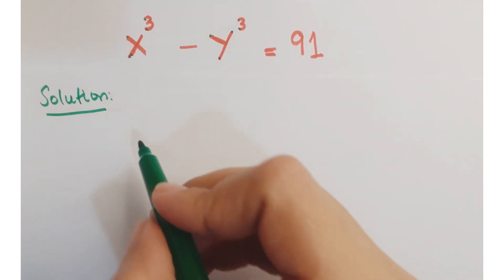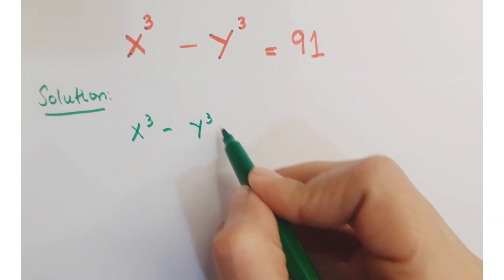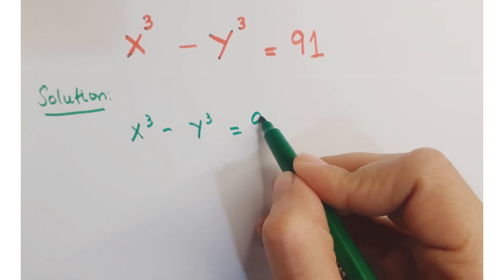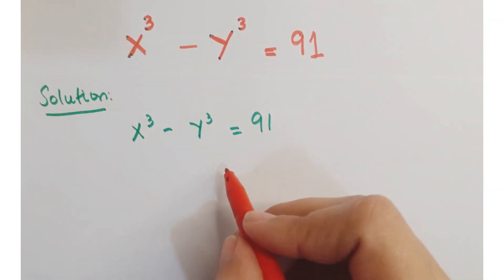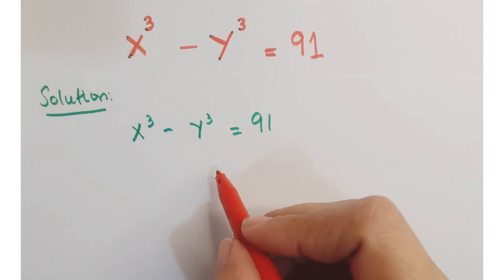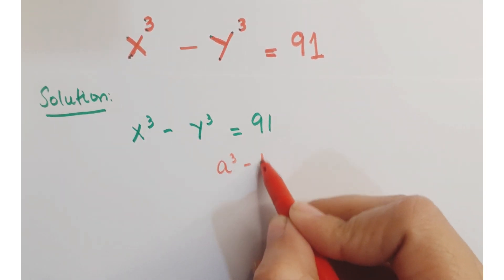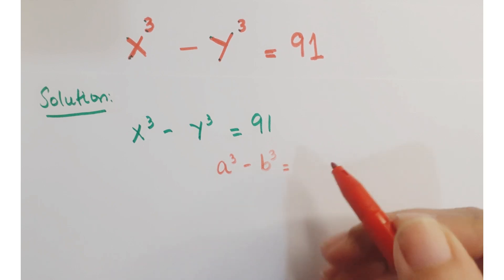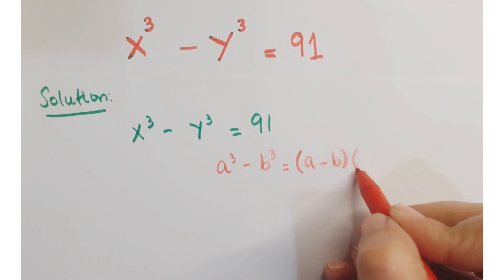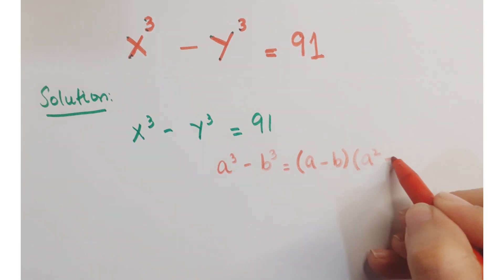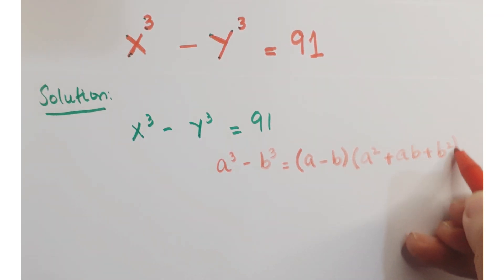Look at this equation: x cubed minus y cubed equals 91. We have a single equation and two variables whose values we have to find out. Comparing this with the algebraic identity, a cubed minus b cubed equals a minus b, times a squared plus ab plus b squared.